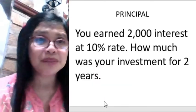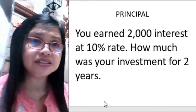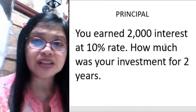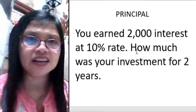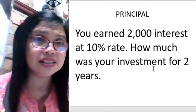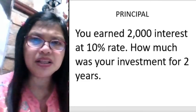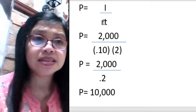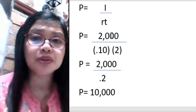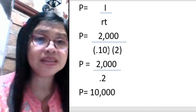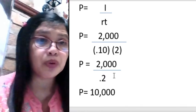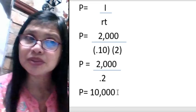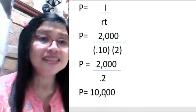Now let's learn how to compute the principal, rate, interest, time, and maturity value. You earn 2,000 interest at a 10% rate — how much was your investment for 2 years? The formula for principal is interest divided by (rate times time): P equals 2,000 divided by (0.10 times 2) equals 2,000 divided by 0.2, giving a principal of 10,000 pesos.